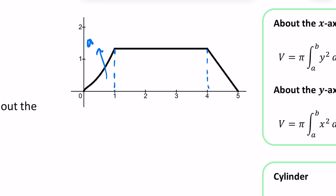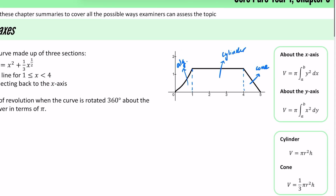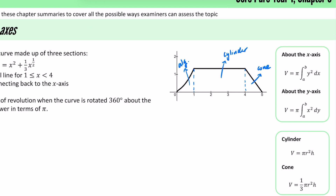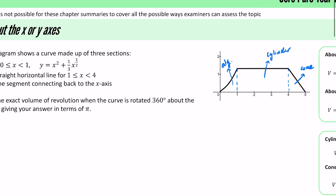This first section we're going to handle algebraically. This middle section, imagining the shape it creates, is a cylinder. And this last part is going to create a cone. So I'm going to do it in three different sections, starting with the algebraic part. The limits are going to be between 0 and 1, and I'm just going to be doing π y² dx.